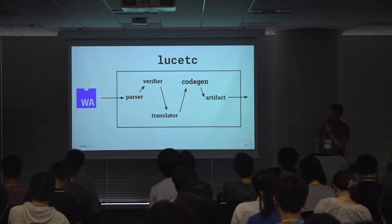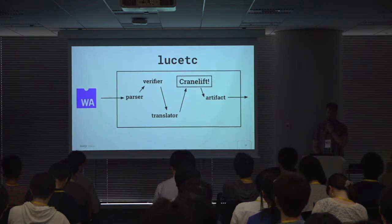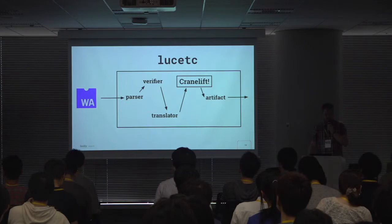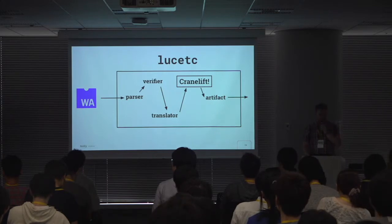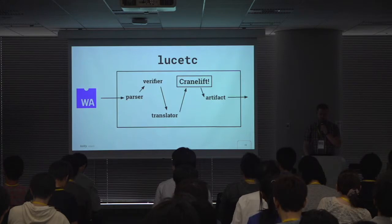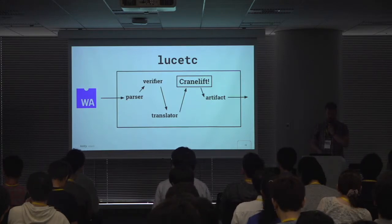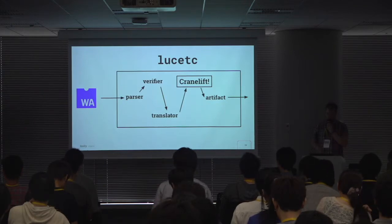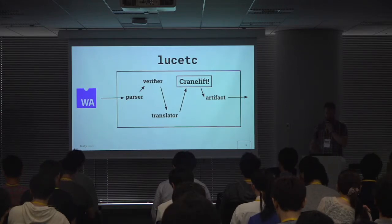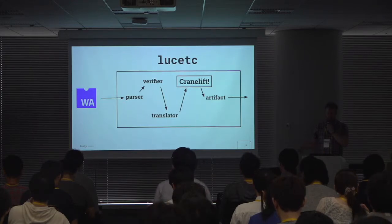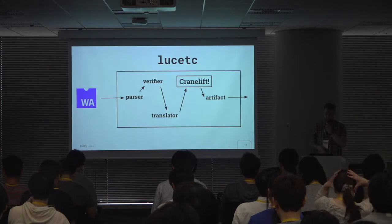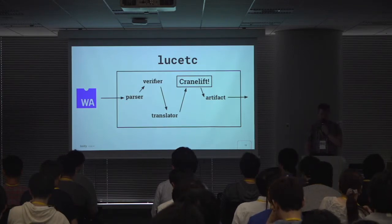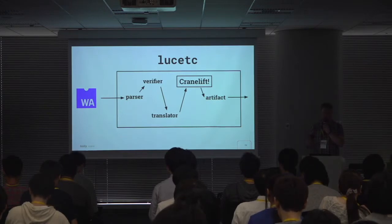The code generator is actually a separate project called CraneLift, and to be honest CraneLift does most of the heavy lifting in this process. It was started and is primarily maintained by a small group of developers and our friends at Mozilla. Fastly has also been contributing to CraneLift — building a project like Lucet in the time that we did and reaching the level of performance we have would have been impossible without it. CraneLift is not only the ahead-of-time compiler we use in Lucet but is also planned to be the next just-in-time code generator used in Firefox.